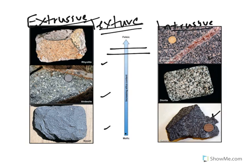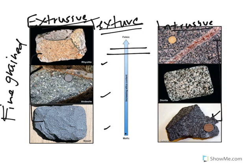Where they cool determines their texture. Extrusive cools really quickly, so it is all fine-grained. However, our intrusive cools really slowly, so it allows for those big minerals to develop. So our intrusives are coarse-grained.